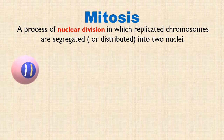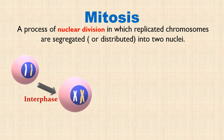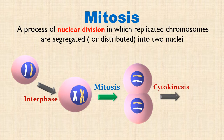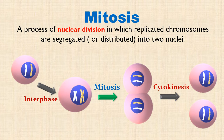Suppose this is the original cell or parent cell having two chromosomes. After interphase, this cell has duplicated chromosomes. It undergoes mitosis and replicated chromosomes are distributed equally into two nuclei. Recall that mitosis is accompanied by cytokinesis, a process in which the dividing cell splits into two daughter cells. Thus, the two daughter cells are identical to each other and also to the parent cell. They contain the same number of chromosomes as the parent cell.